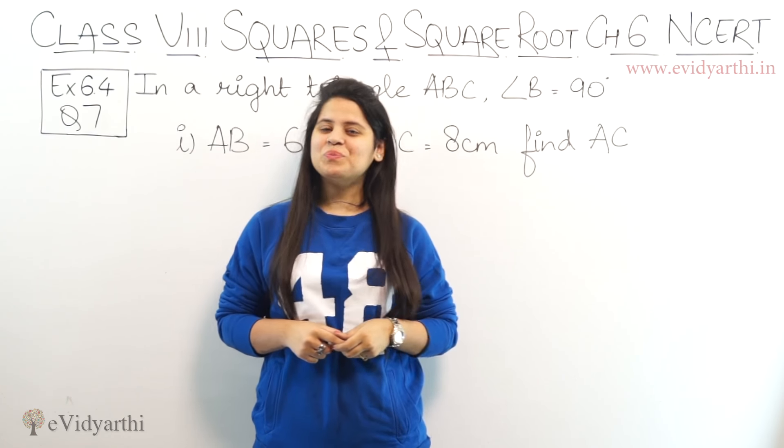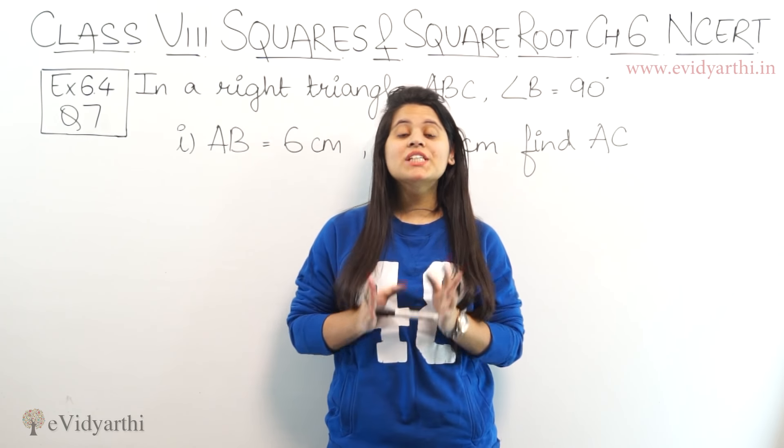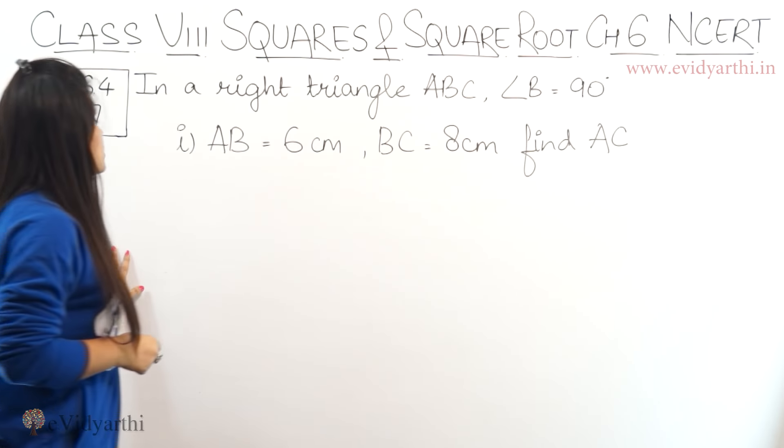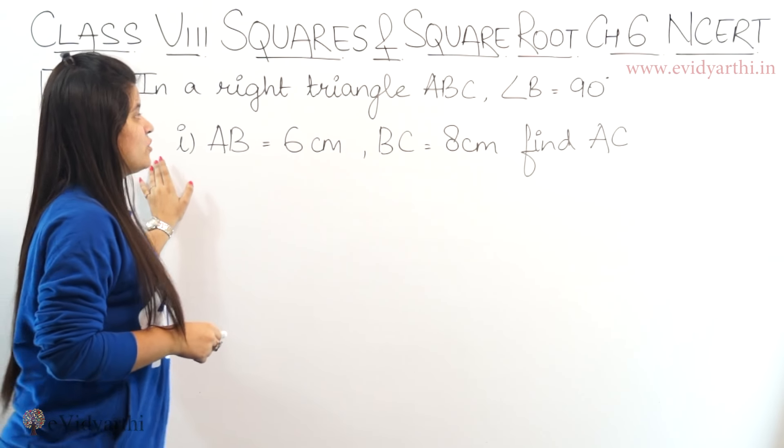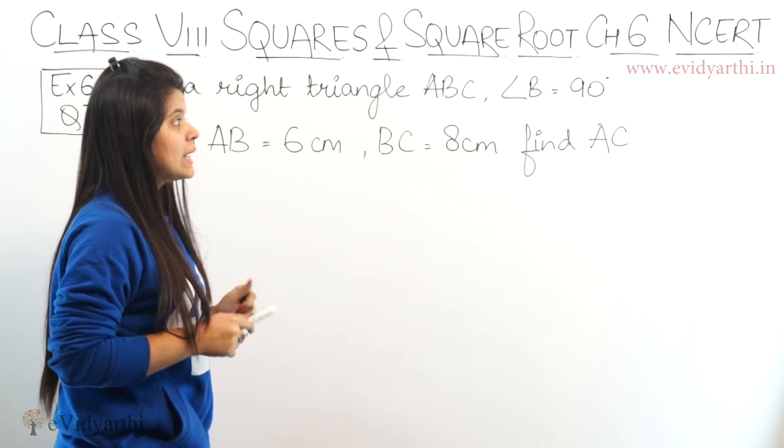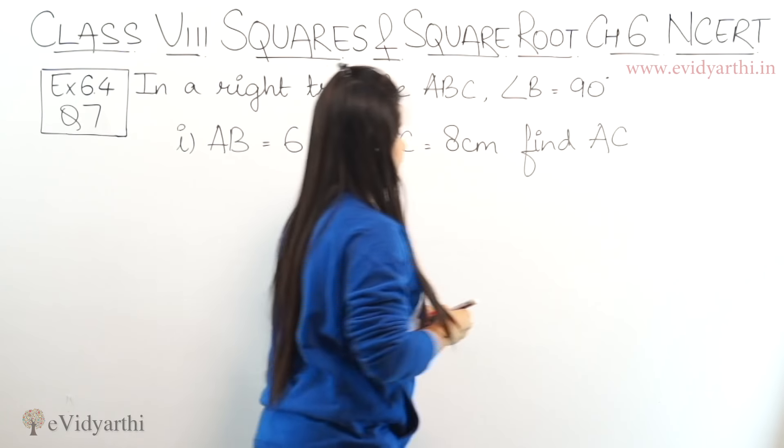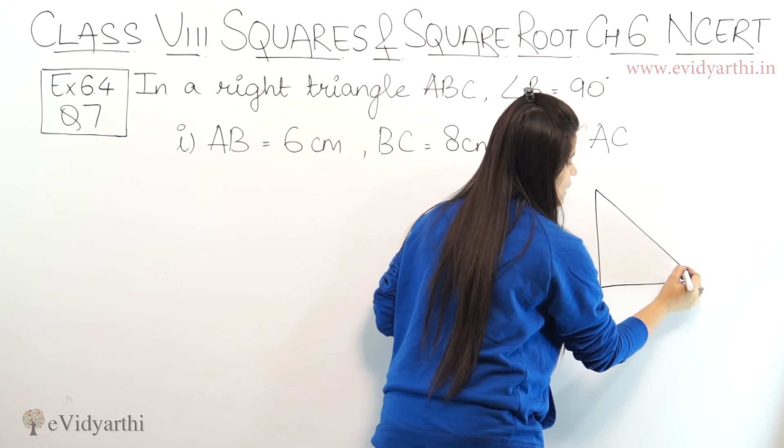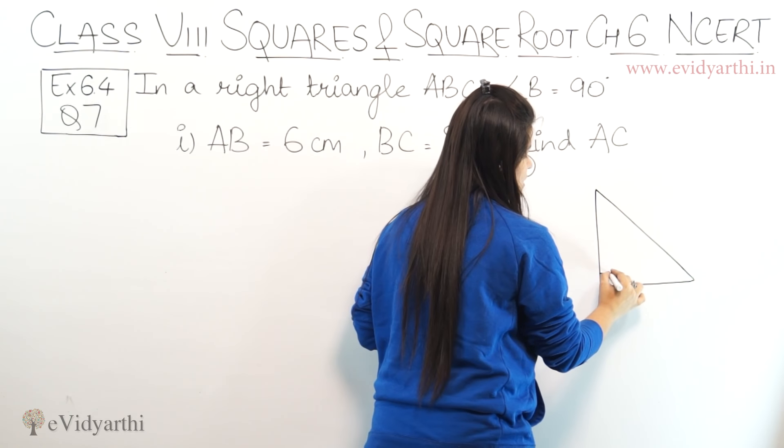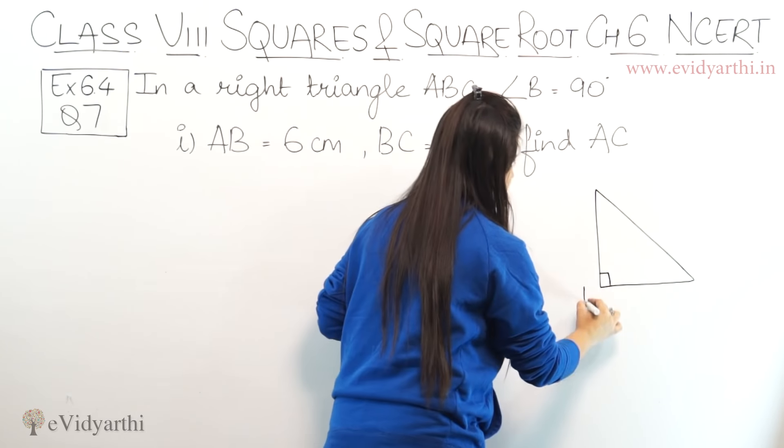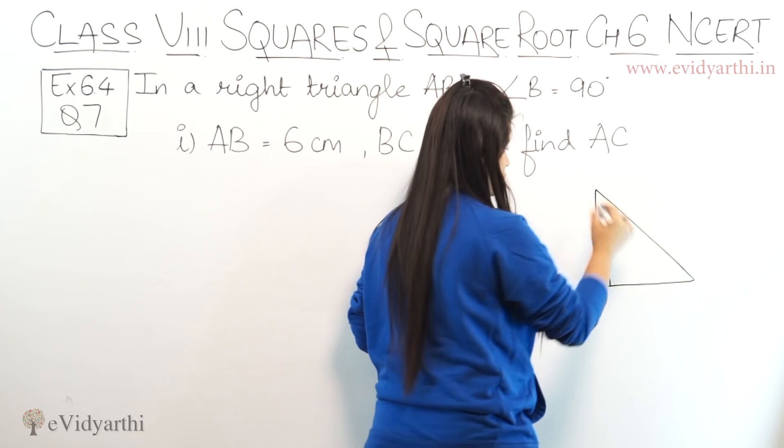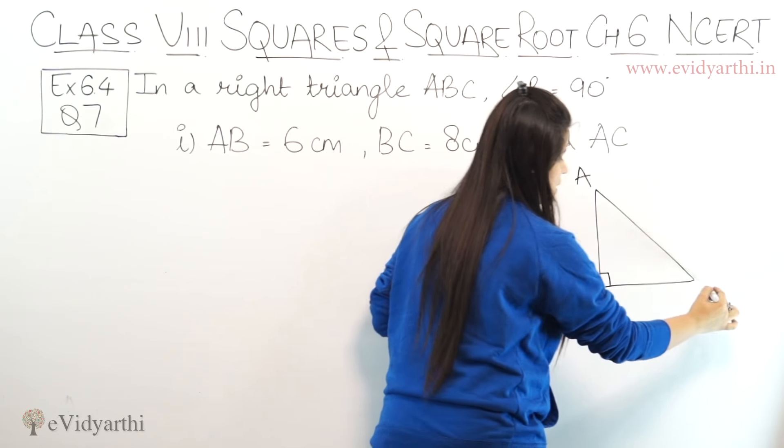Hello everyone, this is Mansi from Evikyati. Coming to question number 7, exercise 6.4. In this question we have a right triangle ABC, angle B equals to 90 degrees. The 90 degree angle is angle B. If you want, you can write ABC.